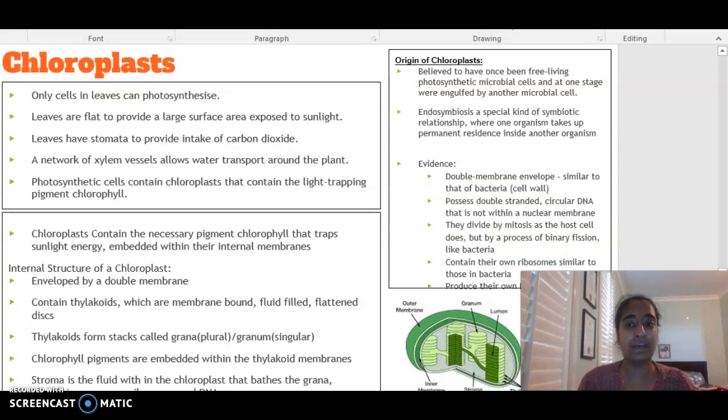This occurs in the chloroplast. So we know that only the cells in leaves can photosynthesize. Leaves are flat and provide a large surface area to be exposed to sunlight. They have stomata, which provide for the intake of CO2, and a network of xylem vessels, which allow the transport of water around the plant. They also contain the necessary pigment called chlorophyll, and chlorophyll is what is trapping that sunlight energy, and it's embedded within the chloroplast internal membranes.